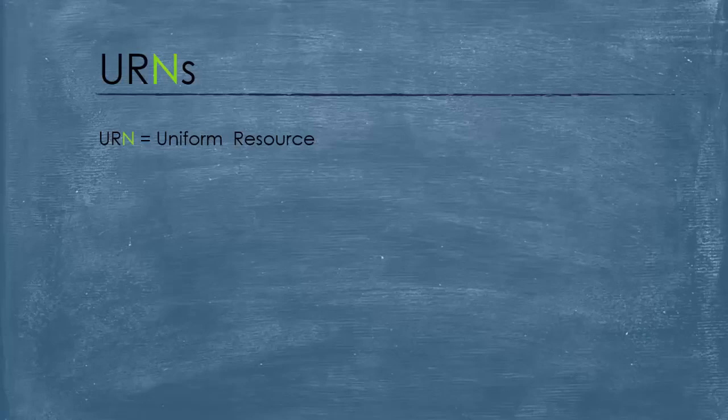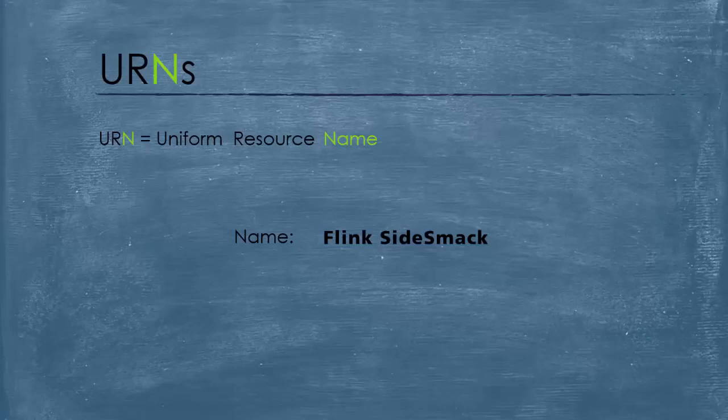A URN stands for Uniform Resource Name. And now this should be obvious to you — it is the name of the resource. Again, in our case, if we want to locate our friend using a URN, we will use his name: Flank Sidesmak. I really love his name, actually.